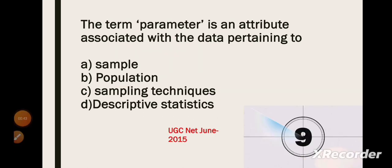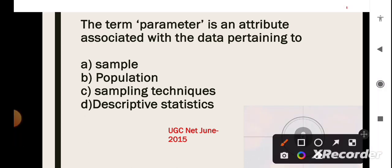Next question is, the term parameter is an attribute associated with the data pertaining to? And here, the correct option is option B i.e. population.